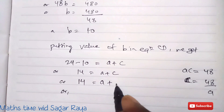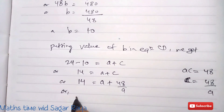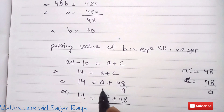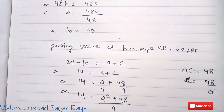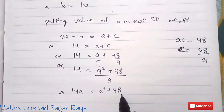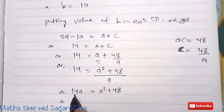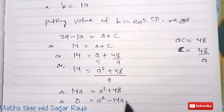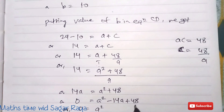Substituting c = 48/a into a + c = 14: 14 = a + 48/a. Multiplying through by a: 14a = a² + 48. Rearranging: a² − 14a + 48 = 0.